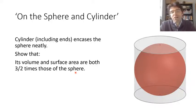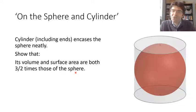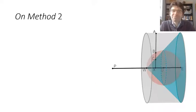Moreover, the Roman writer Cicero, about 150 years after Archimedes' death, says that you could still go to Syracuse and find Archimedes' tomb, which was adorned with this image of the sphere nestling inside a cylinder in this way.